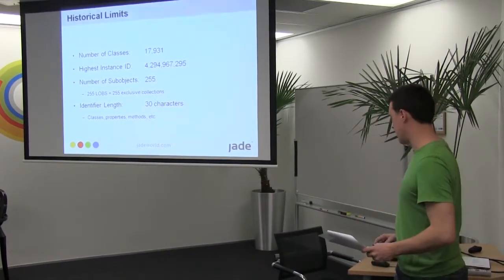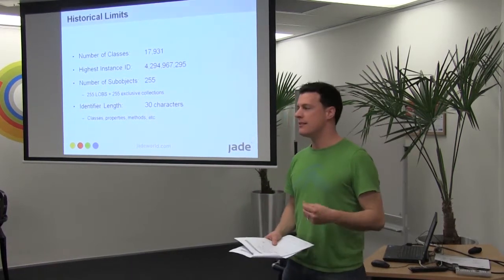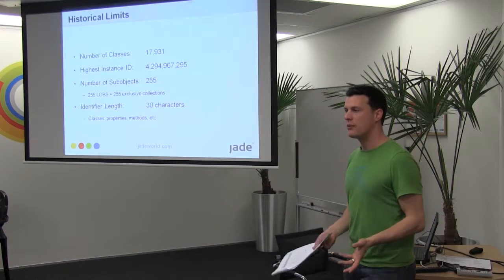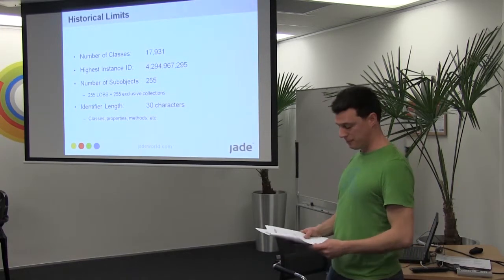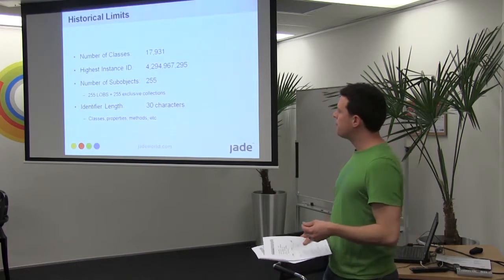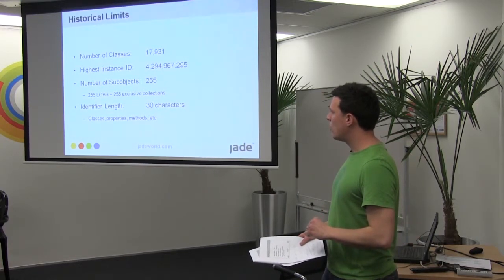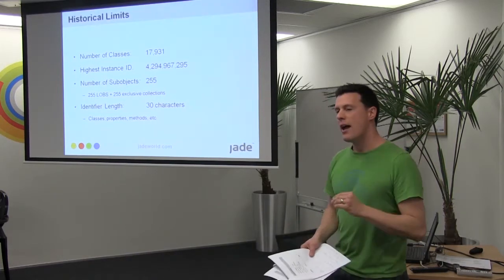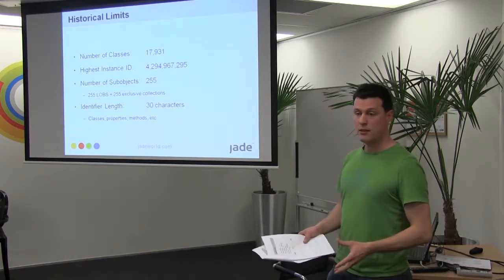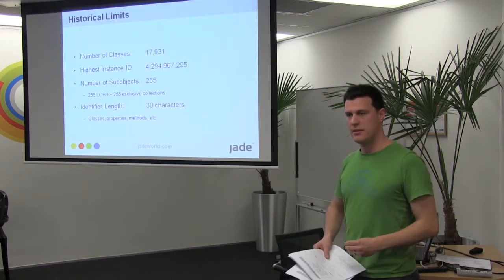The identifier names — an identifier is any class name, any method name, property name, and that includes forms and controls. As technology improves and as Jade systems get older, people run into these limits.